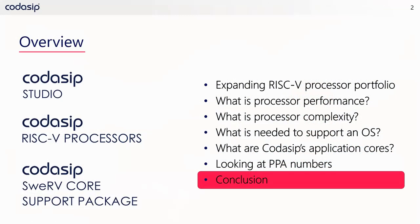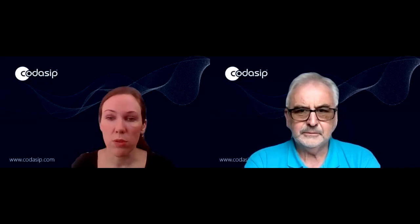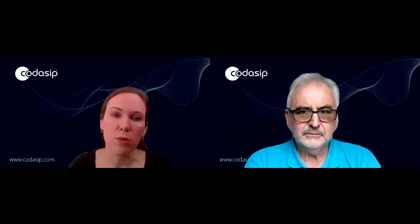We have looked at some factors involved in choosing a processor core, such as performance, complexity, whether you need an operating system, and how PPA numbers are influenced by a compiler. During the series, Codacip has launched its first application processors and we have looked into that too. So I have a few more questions to conclude the video series.